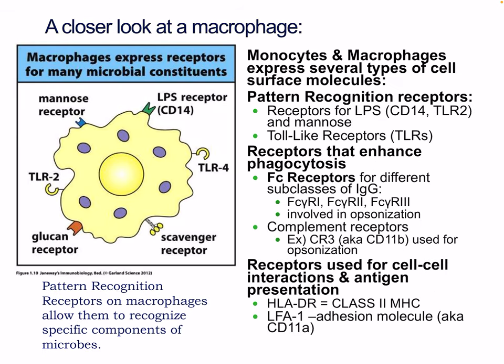The macrophage expresses receptors for many microbial constituents, including mannose receptor, LPS (via TLR4 and TLR2), glucan, and scavenger receptors. Pattern recognition receptors include receptors for LPS (CD14, TLR2), mannose, and other TLR receptors. Receptors that enhance phagocytosis include FC receptors for different subclasses of IgG — FC gamma receptors 1, 2, and 3 — involved in opsonization. Complement receptors including CR3 are used for opsonization through complement.